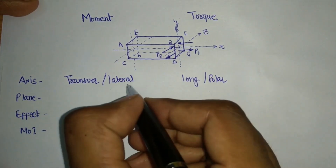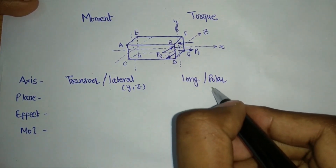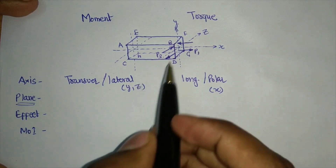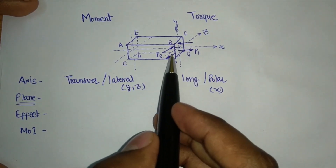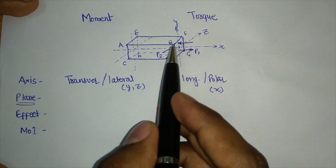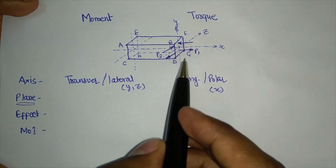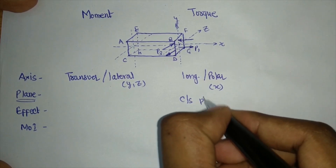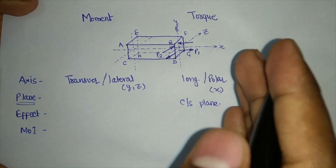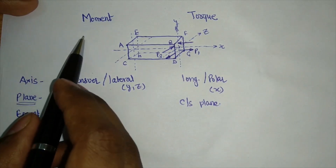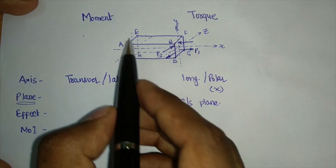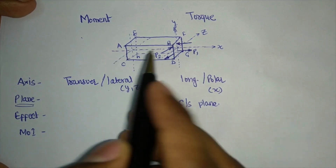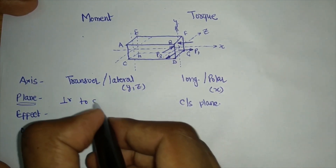For torque, the couple acts in the cross-sectional plane, or a plane parallel to the cross-sectional plane. For moment, the couple acts in a plane parallel to the longitudinal plane — specifically the plane ABCD — which is always perpendicular to the cross-sectional plane.